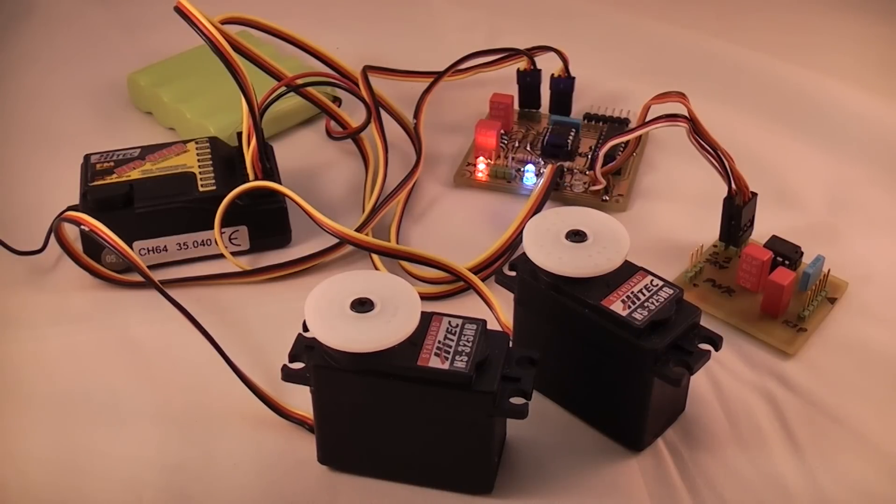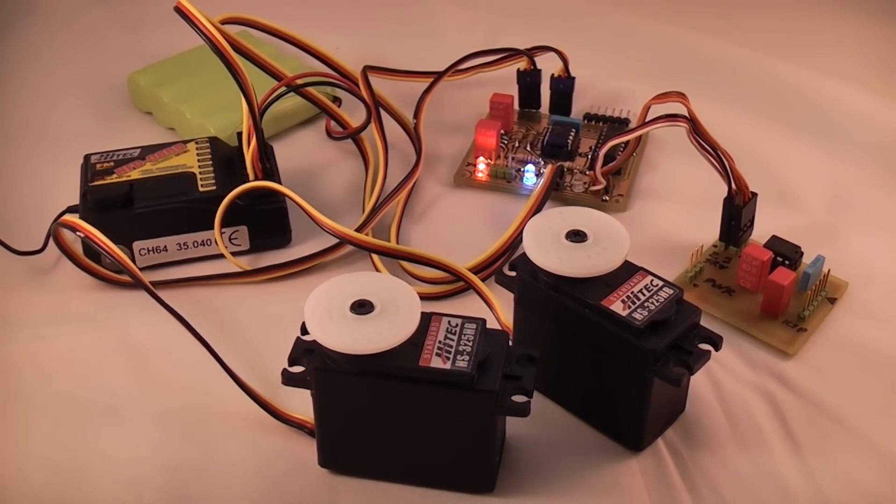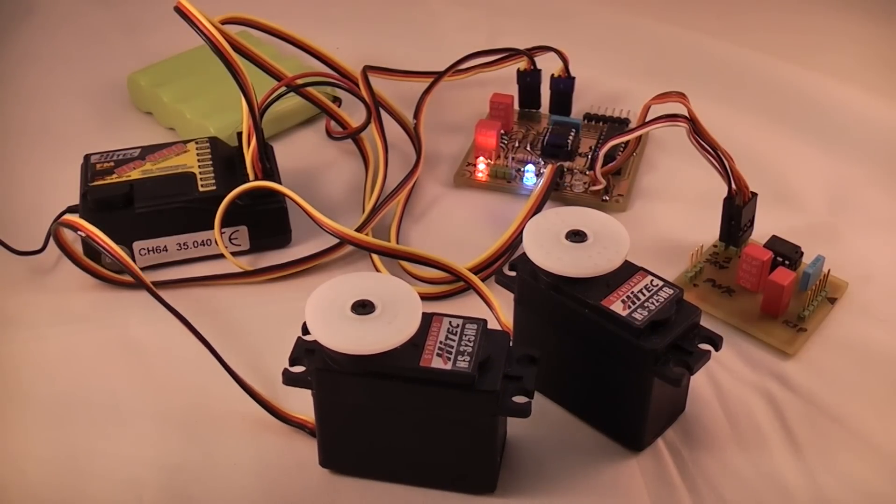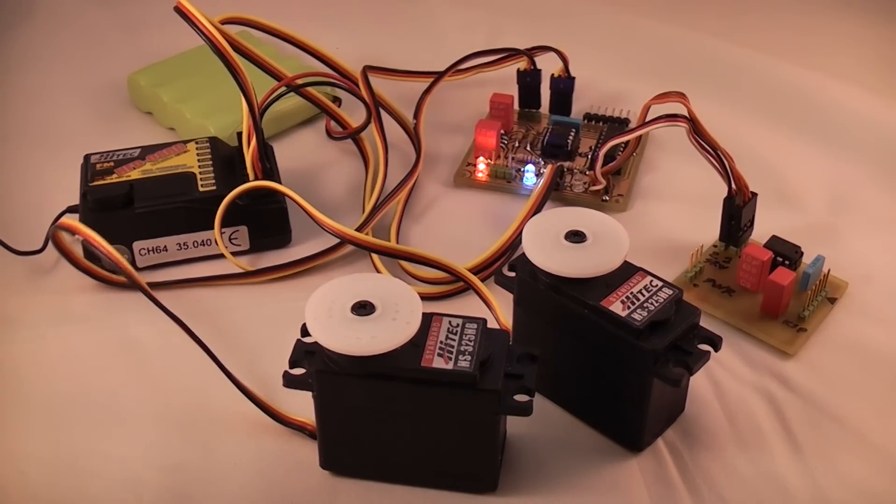If the radio control transmitter is powered on, the servo switcher detects the valid control pulses and switches over to the radio control signal, disconnecting the microcontroller signals.